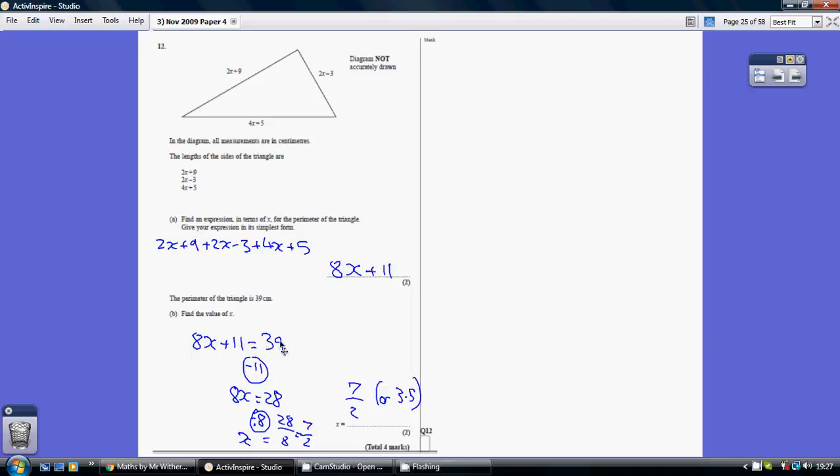So now you should be quite familiar how to do this. You just follow the process of rearranging to get x on its own. So how do you undo the adding of 11? You take away 11 from both sides. So 8x equals 28. How do you undo a timesing by 8? You divide by 8. So x is 28 divided by 8, which is 7 over 2, or 3.5.